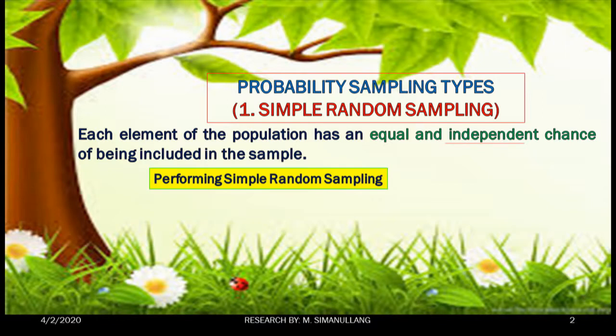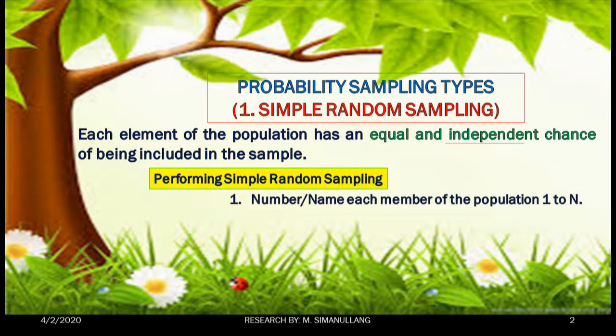How is the sample taken from the population? In simple random sampling, you need to follow these procedures. The first step is to number or to name each member of the population 1 to n — meaning 1 until all members of the population are numbered or named.